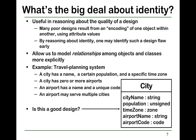So why do we care about identity? Identity is useful in reasoning about the quality of a design. Many bad designs result from encoding one object within another using attribute values, and by reasoning about identity, we can identify such design flaws in the early stage.